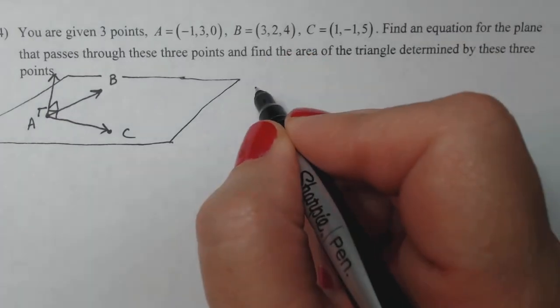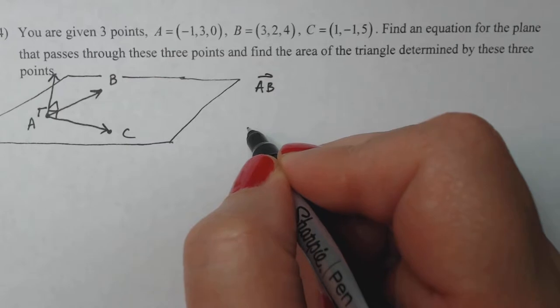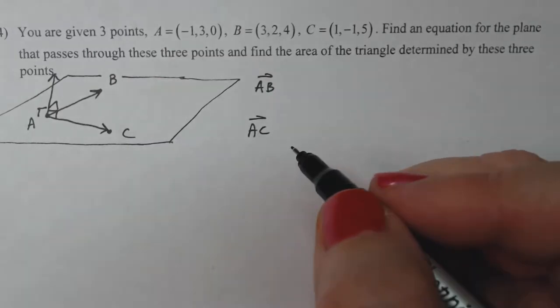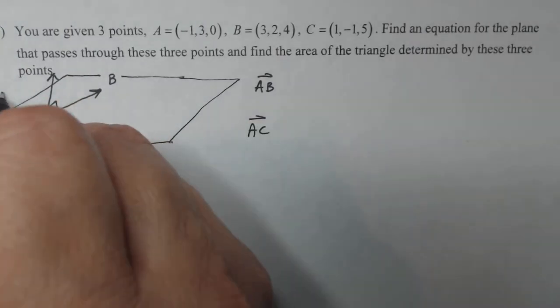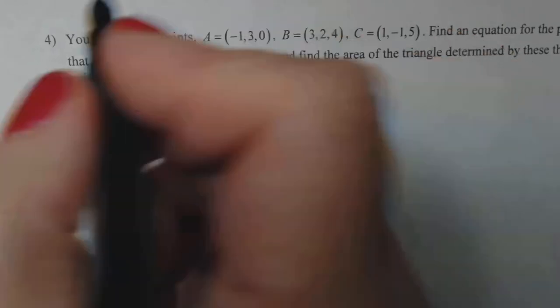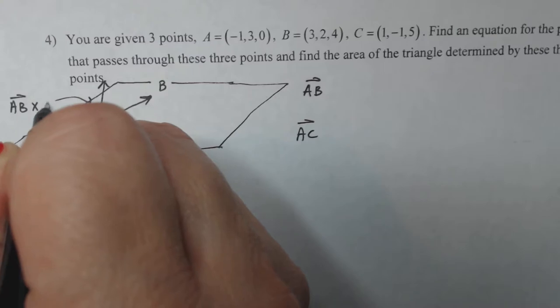So what are our steps? We need to find the vector AB, we need to find the vector AC, and then we gotta cross them to get the vector that's pointing up here. So this vector right here will be AB cross AC.